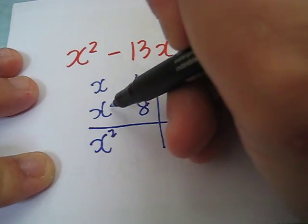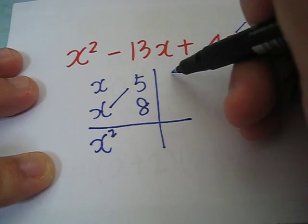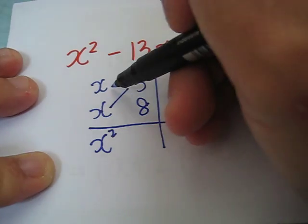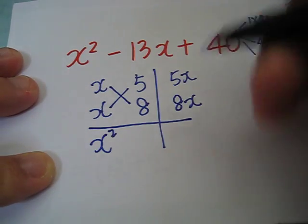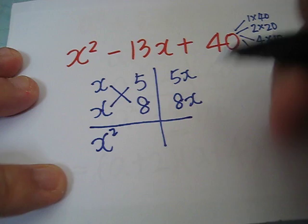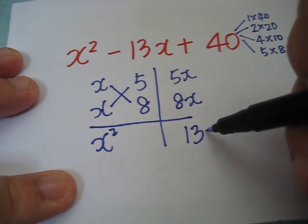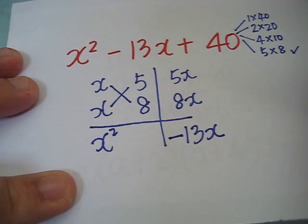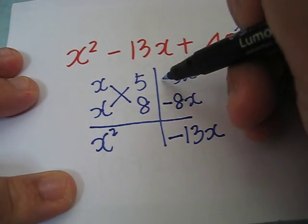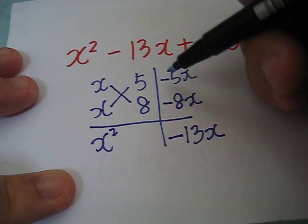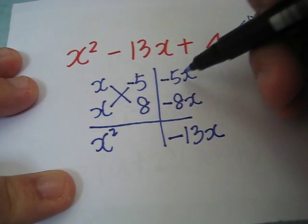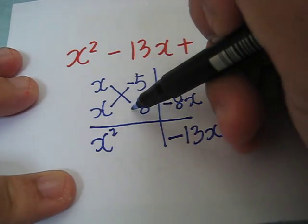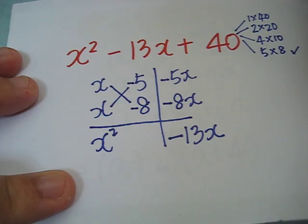Now, 5 and x will give me 5x. Here, we get 8x. From 5x and 8x, we could get negative 13x if both are negative, which will translate to x times negative 5 to give us negative 5x and x times negative 8 to give us negative 8x.